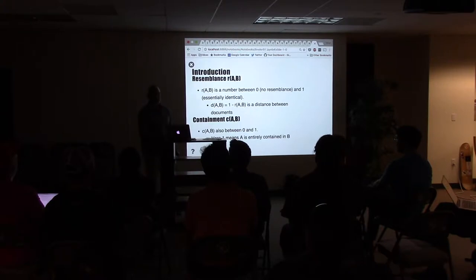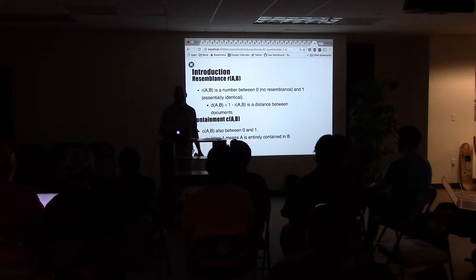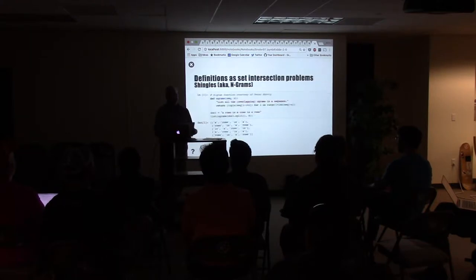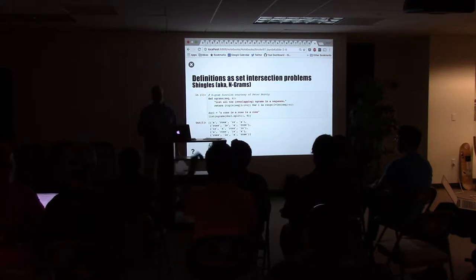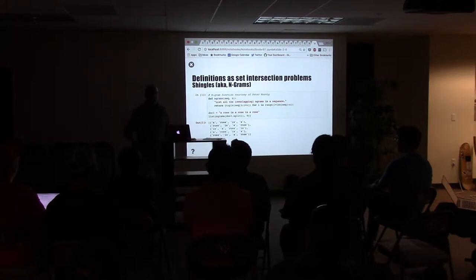He points out that if you do one minus the resemblance, you get a distance metric, which is a proper metric in the sense that it satisfies a triangle inequality, so it makes a good metric for clustering applications. To be perfectly honest, I'm going to ignore containment almost entirely in this talk — resemblance is the more interesting thing anyway.